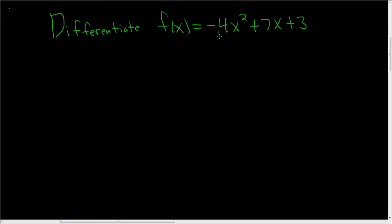So we have to find the derivative of negative 4x squared plus 7x plus 3. Solution: we're going to use the power rule. So f prime of x.